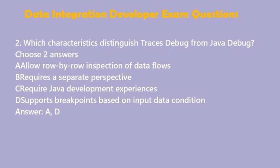Question 2: Which characteristics distinguish Traces Debug from Java Debug? Choose two answers. A. Allow row-by-row inspection of data flows. B. Requires a separate perspective. C. Require Java development experience. D. Supports breakpoints based on input data condition. Answer: A, D.